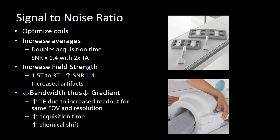You can also increase your field strength — that's why we develop higher field strength scanners, going from 1.5 to 3 tesla. You get an improvement in signal-to-noise ratio by 1.4, but you do increase the number of artifacts created at higher field strength. You can also decrease your bandwidth, which will decrease your gradient and improve your signal-to-noise ratio, but it causes increased chemical shift artifacts and increases your acquisition time.